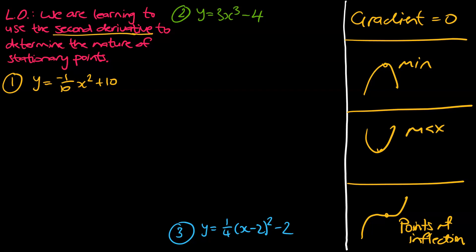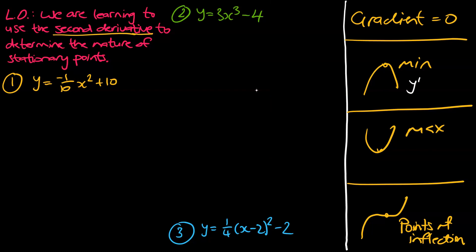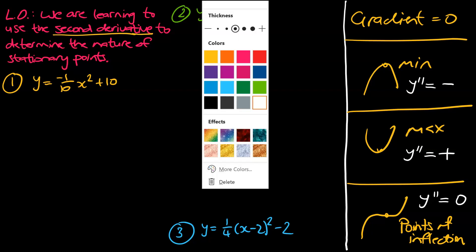Let's quickly change pen colour so we know what we're aiming for. At the minimum, y double-dash is going to be a negative value. If you're looking for a maximum, y double-dash is going to be equal to a positive number. And at the point of inflection, if y double-dash is zero, that will give us a point of inflection. Let's try to link this with the algebra we're just about to complete.